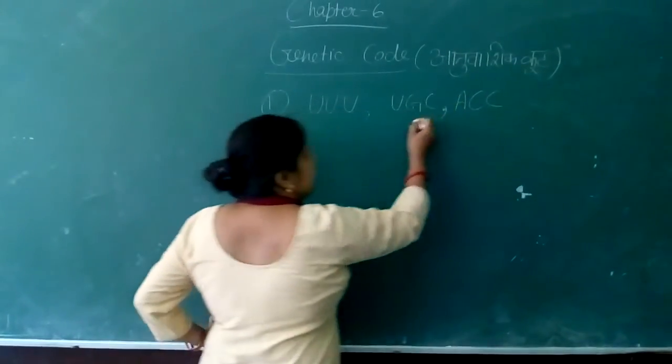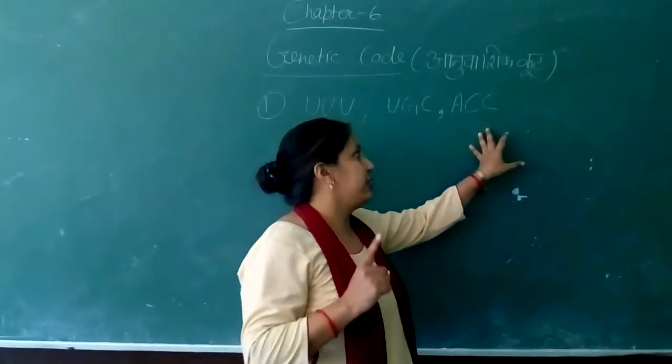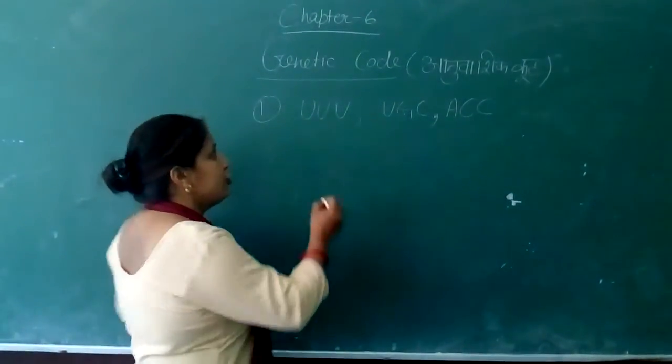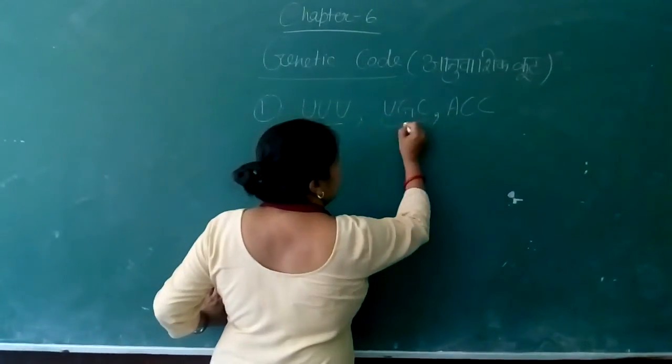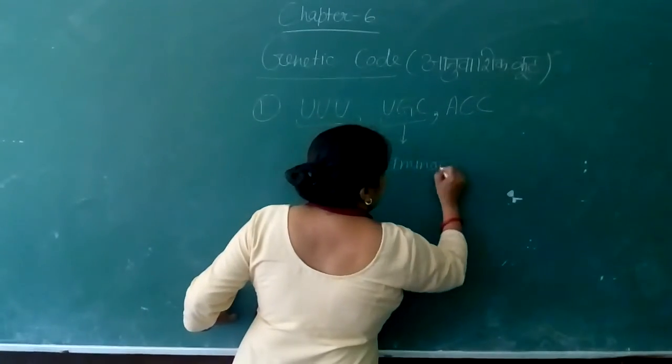The genetic code is based on base pairs. These code for amino acids.